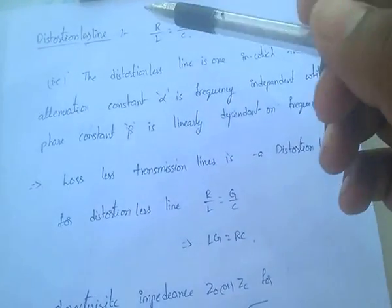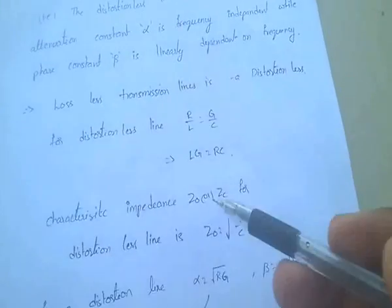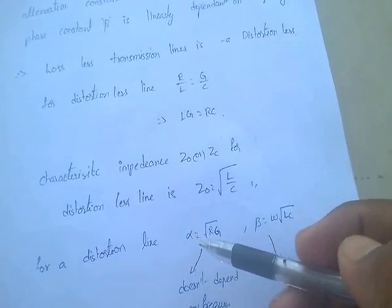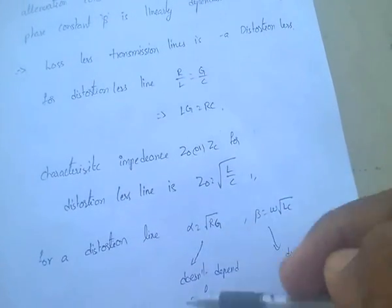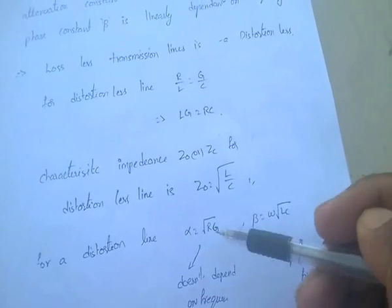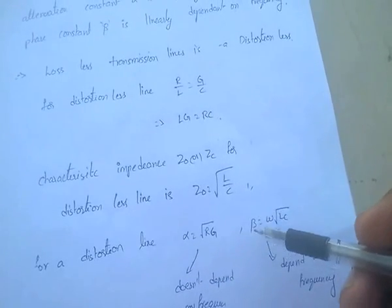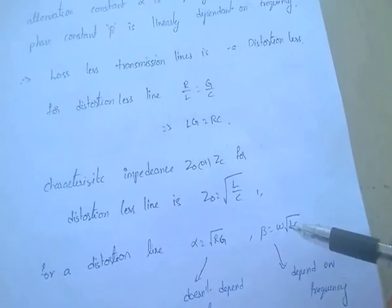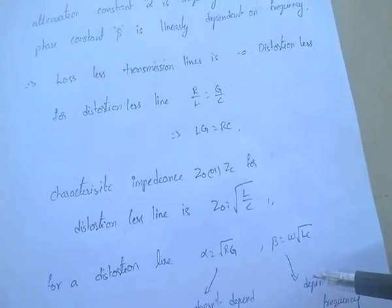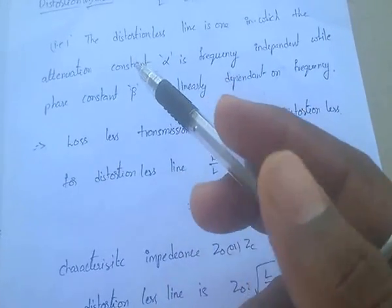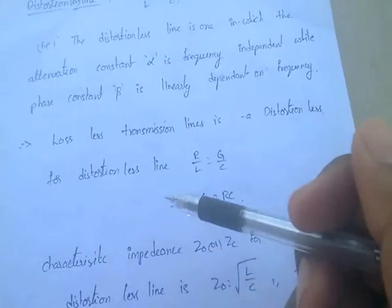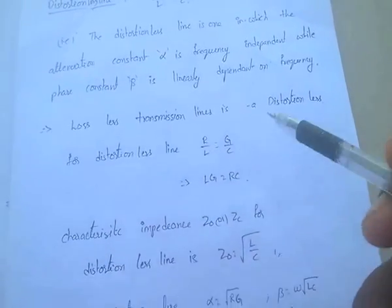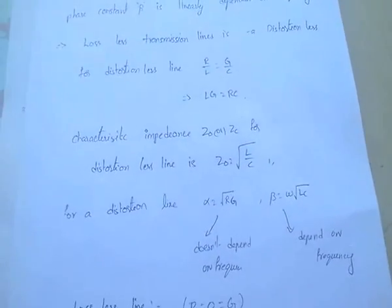For a distortion-less line, the attenuation constant must be independent of frequency and the phase constant beta must be dependent on frequency. Then the transmission line is said to be distortion-less. The condition is R by L equal to G by C.